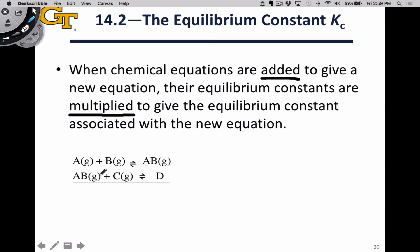So here's an example. When we add these two equations, the AB gas particles end up cancelling out, and so we end up with a final total reaction of A plus B plus C, all gaseous, goes reversibly to D, which we're also going to call a gas.